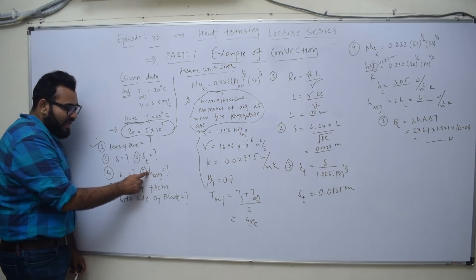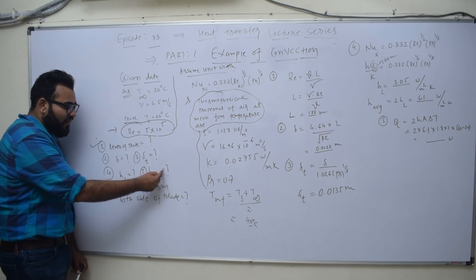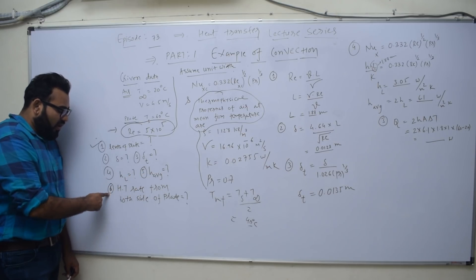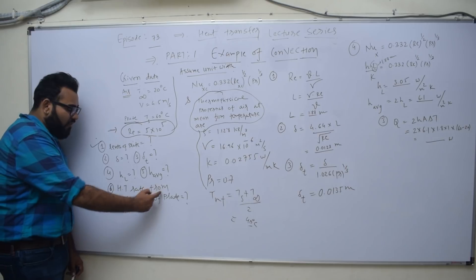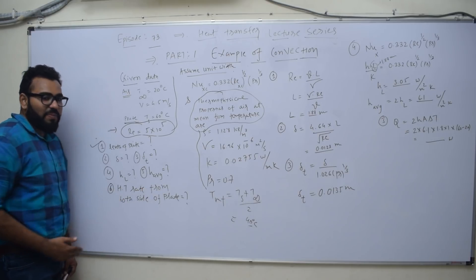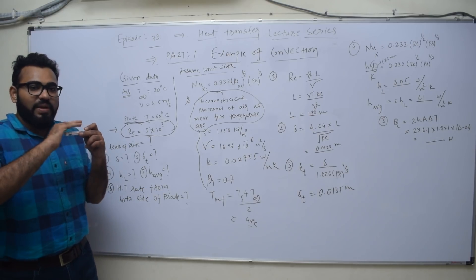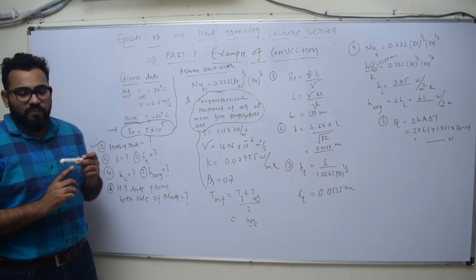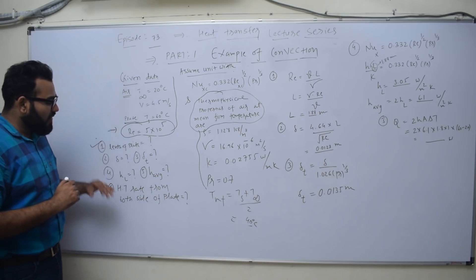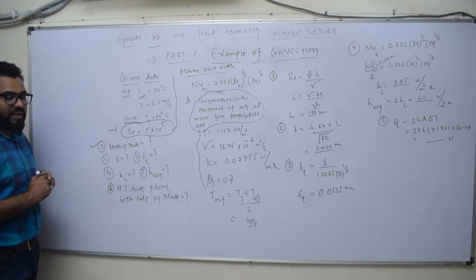Find the average heat transfer coefficient. Find the heat transfer rate from both sides of the plate — that means both above and below the plate. You have to find what the heat transfer rate is from both sides.